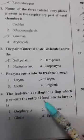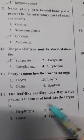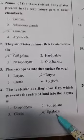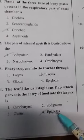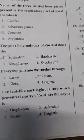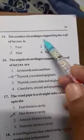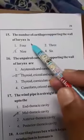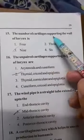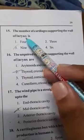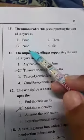The leaf-like cartilaginous flap which prevents the entry of food into the larynx is the epiglottis. The epiglottis is made of elastic cartilage. The number of cartilages supporting the wall of the larynx — also called the voice box or sound box — is 9.